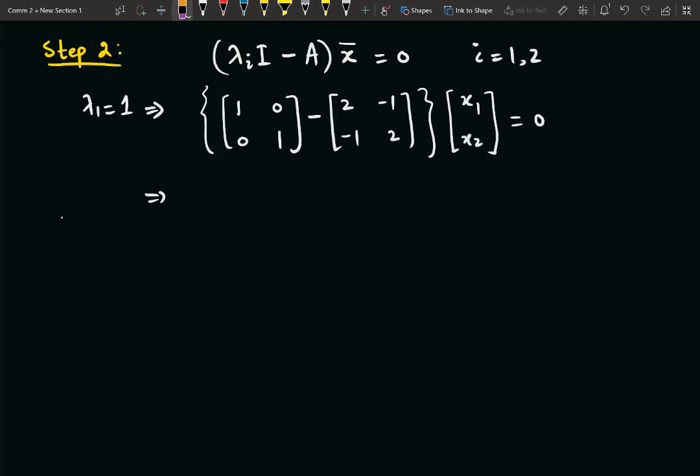So it will become [-1, 1; 1, -1] and multiply it with [x₁; x₂] equal to [0; 0], because the right-hand side is basically zero vector.